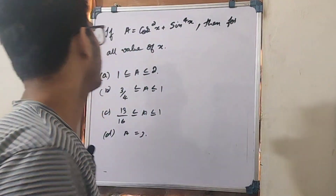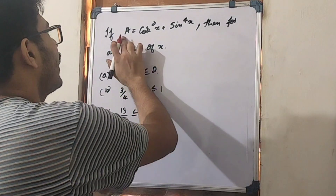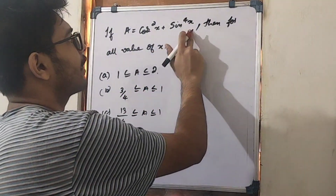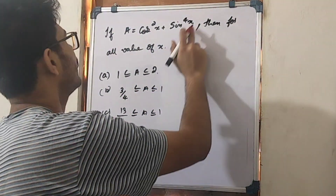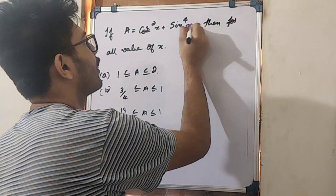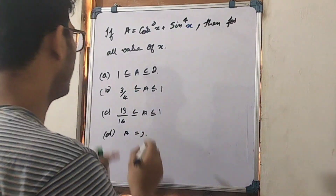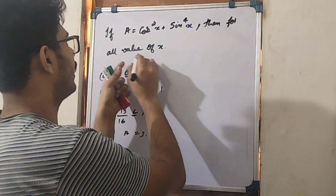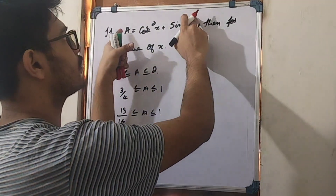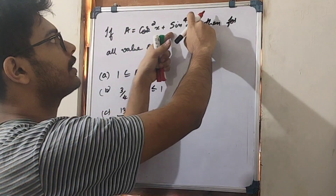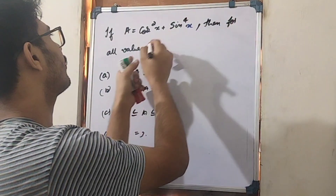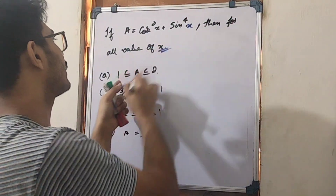If a is equal to cos squared x plus sin raised to 4x, then for all values of x, find the value of a.